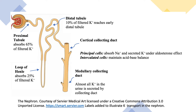How does potassium get into the urine? It gets into the urine by secretion in the collecting tubule. So potassium excretion is by secretion in the collecting tubule. The collecting tubule has two parts: cortical and medullary. In the cortical collecting tubule, we have two types of cells: principal cells which absorb sodium and secrete potassium under the effect of aldosterone, while the other type is the intercalated cells, which maintain acid-base balance.